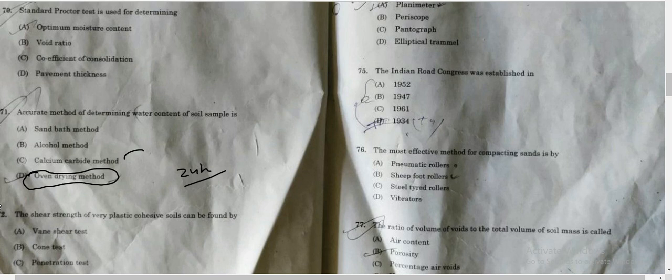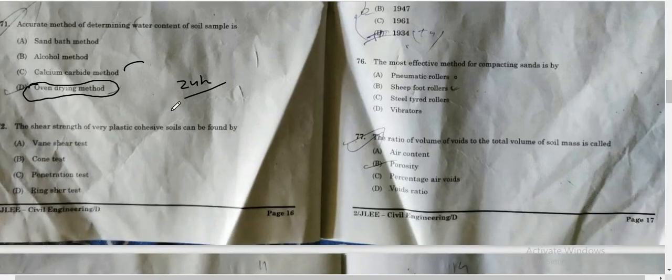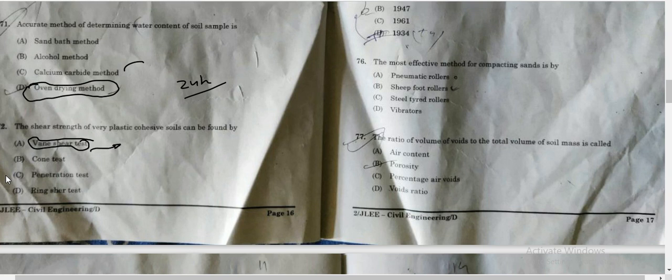So first question: which one is accurate? We say oven drying method. Second question: which one is very fast? We say calcium carbide method. Coming to the next question, that is the shear strength of very plastic cohesive soil. When we do cohesive soil, we always remember that cohesive soil is associated with vane shear test. Vane shear test is for clay soil, very plastic soils. Option A is the correct answer.